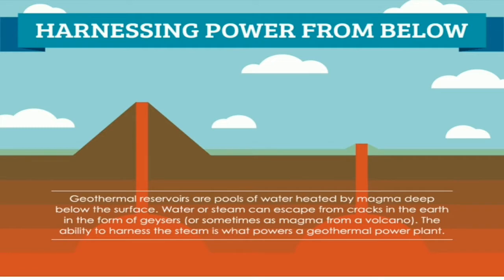There is a natural source of power found below the surface of the earth that has been around for centuries. Underground below us, there are pools of water heated by magma or molten rock. These pools of water make up our geothermal reservoir. Harnessing the power of the earth's temperature to produce electricity or heat or cool our homes and businesses is the essence of geothermal power.